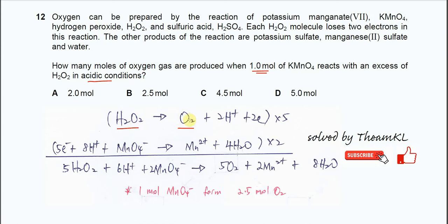After that, you need to balance the hydrogen, because oxygen is already balanced. So you need to put two hydrogen ions on the right-hand side to balance the hydrogen. After that, you need to balance the charge. Because the left-hand side is neutral, the right-hand side must also be neutral. So you need to add two electrons here. This is a balanced half-equation.